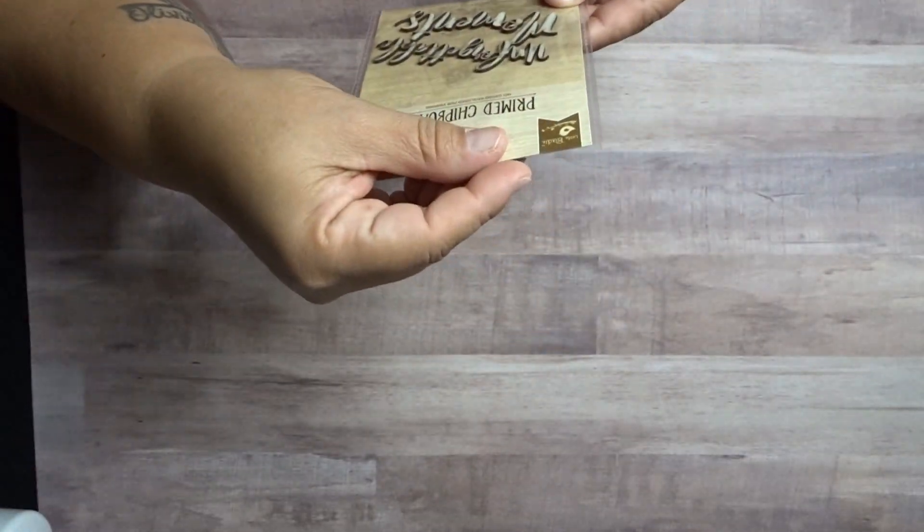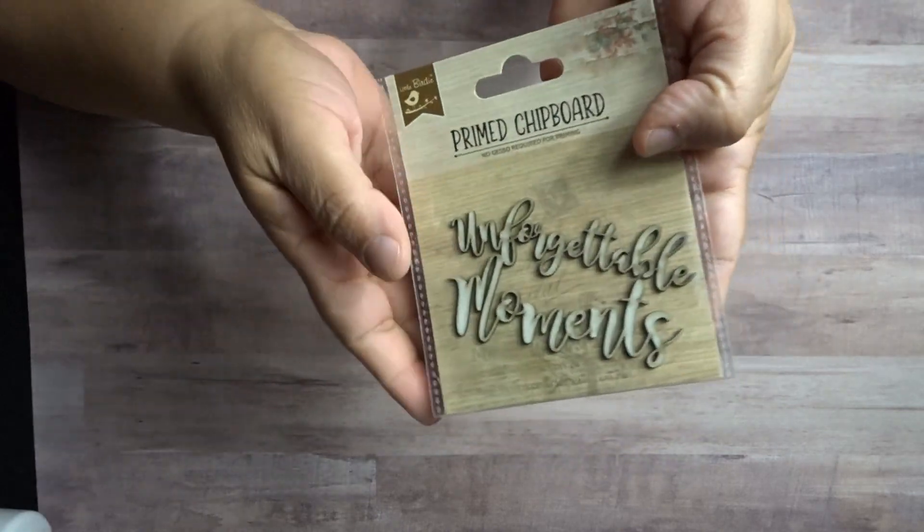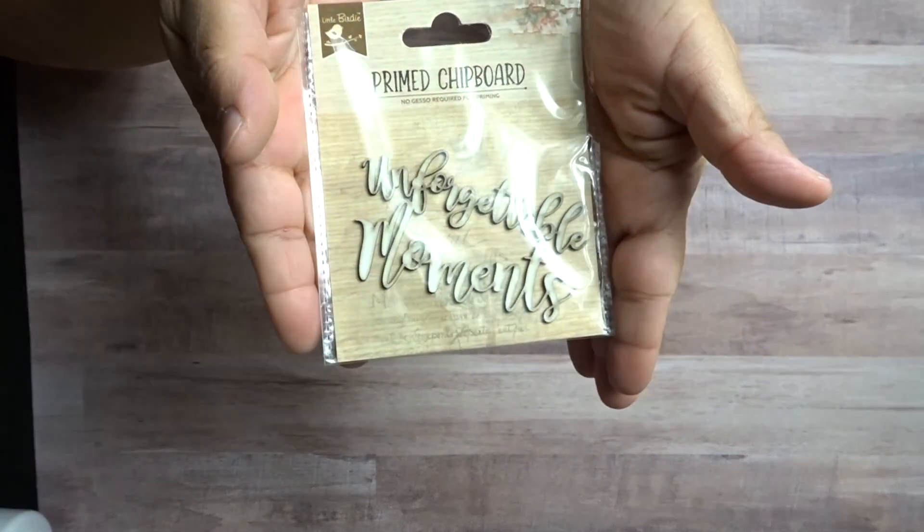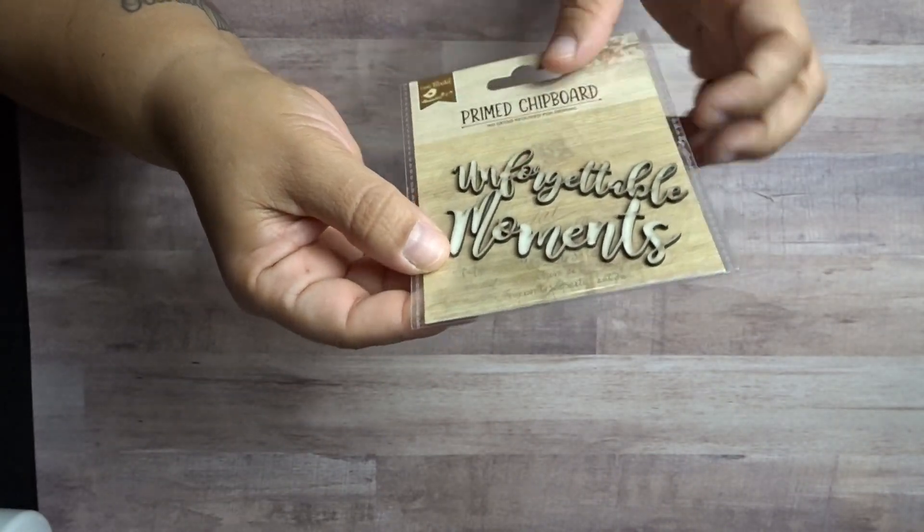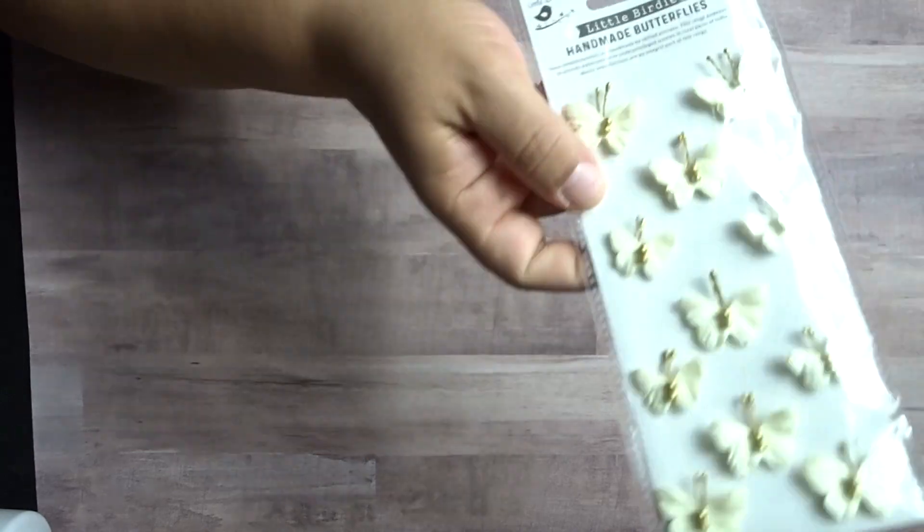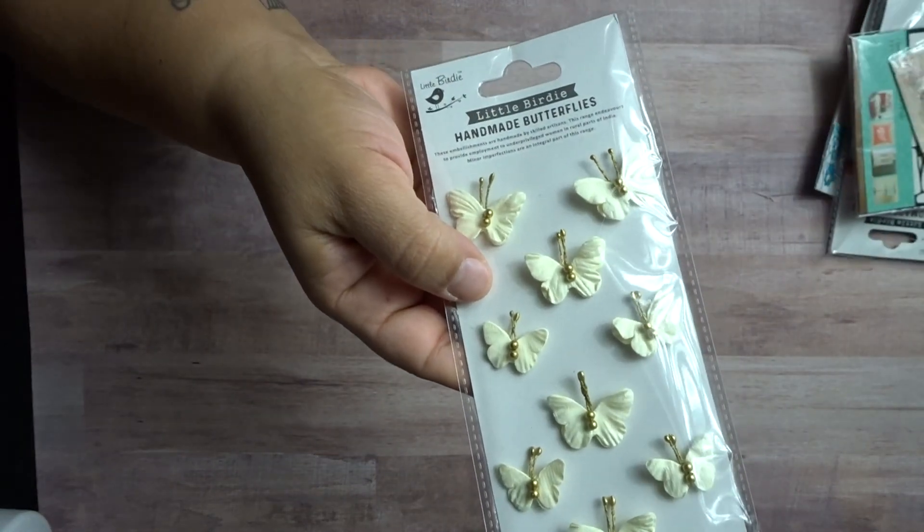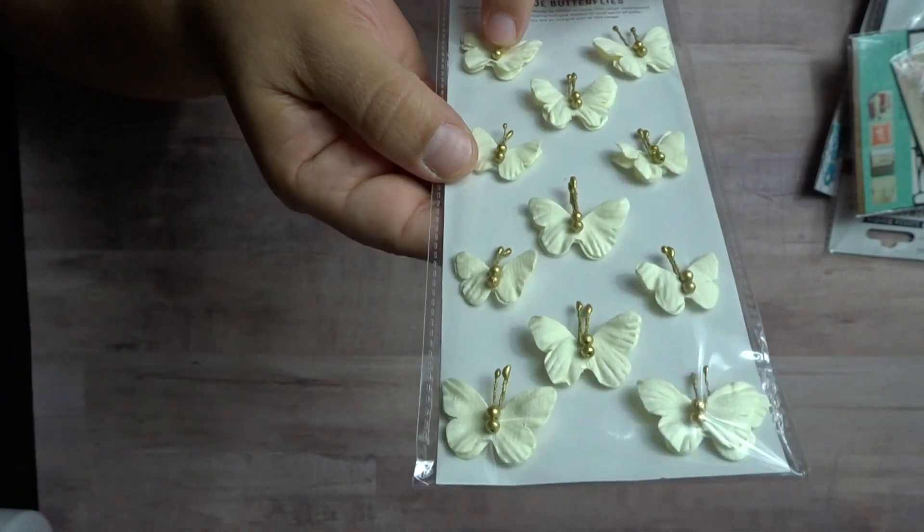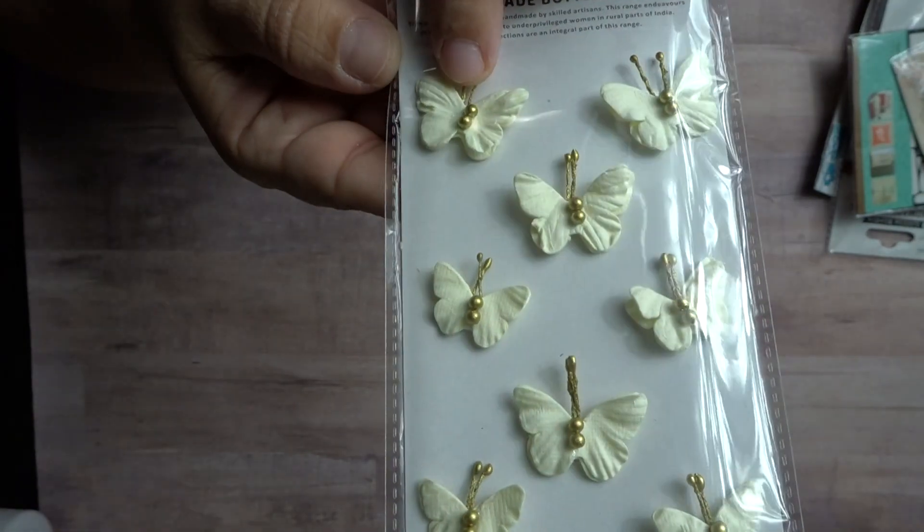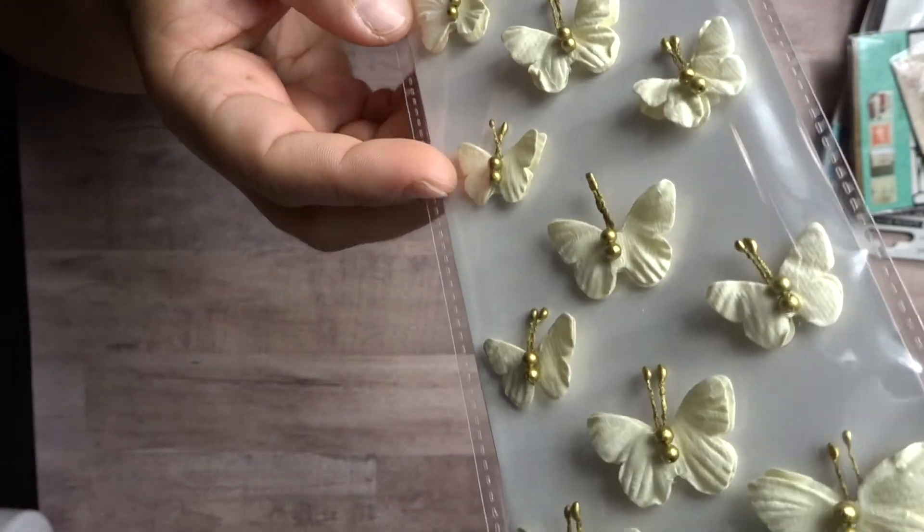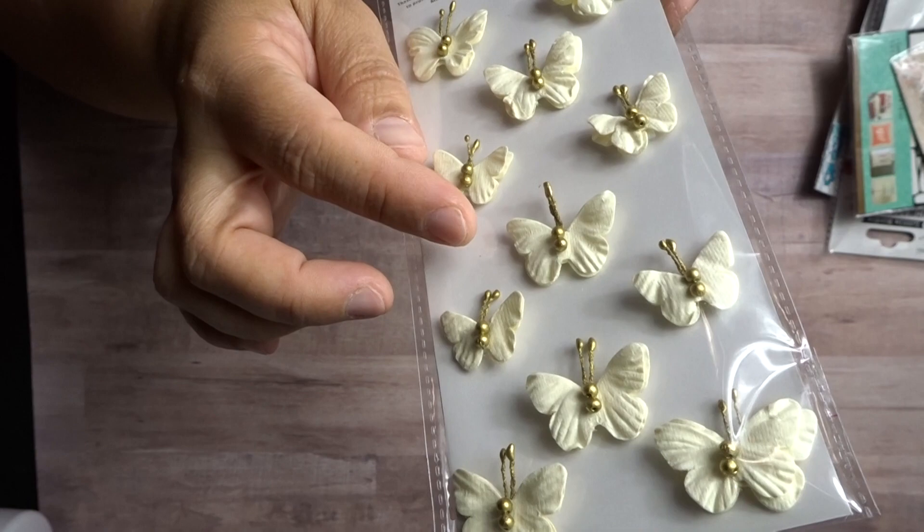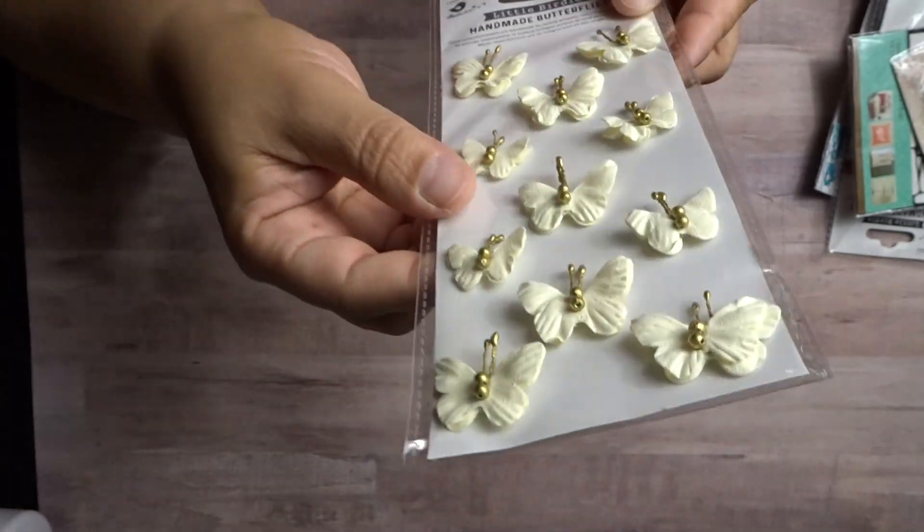Then this was a chipboard and it says Unforgettable Moments. And this was one piece. So then I also got these butterflies here. And they have two little tiny balls here in gold with the little antennas. And they're double. So it's like you can fix them to make them look like they're flying. But I thought these were really cute.